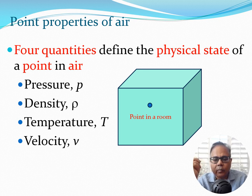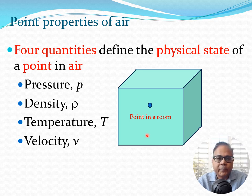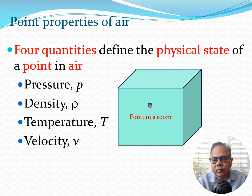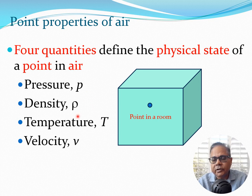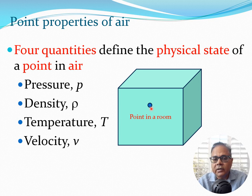If we look at a typical point in a room — I have made a room here shown in green — and there is a point in this room full of air, then at that point there are going to be some specific quantities associated with it. These are typically the four quantities which define the physical state of a point in air anywhere in space. These quantities are pressure, density, temperature, and velocity. You can contemplate a point in the room you are sitting in — that point certainly has a temperature.